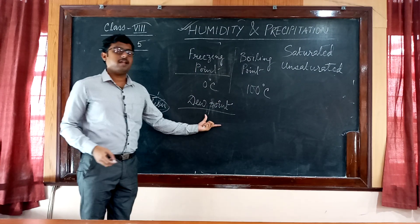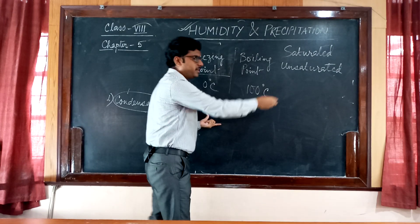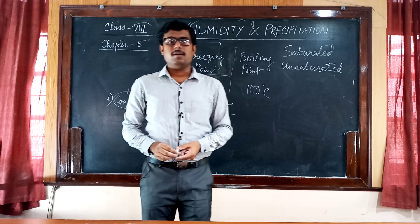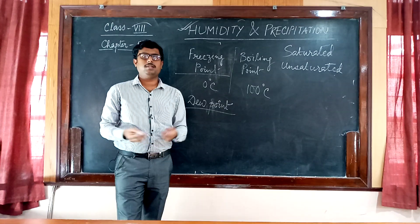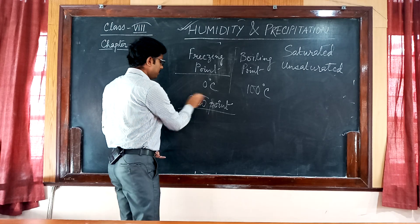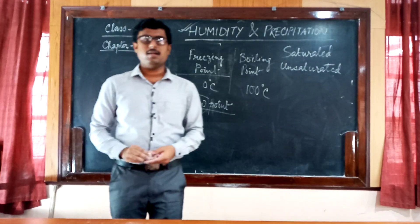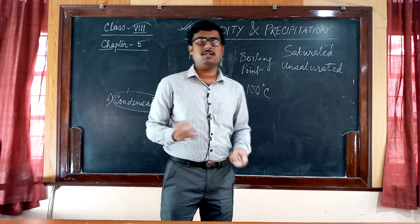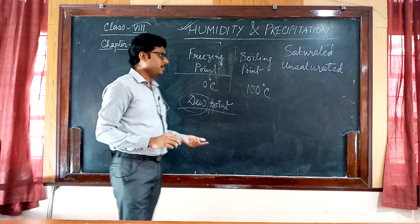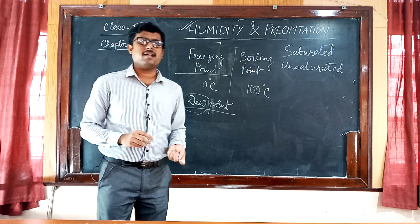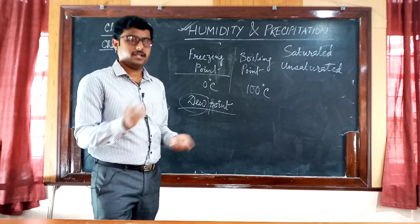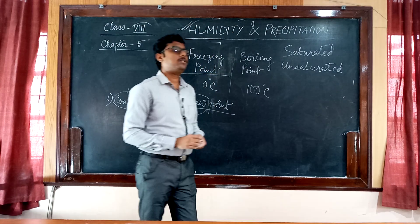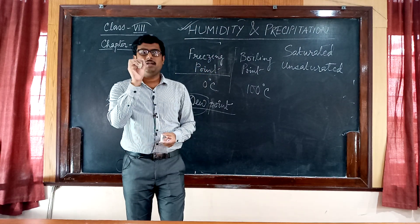The temperature at which the air saturates is called the dew point. Dew is one thing and dew point is another. The dew is a form that can be observed in the atmosphere as tiny water droplets. The question is: is dew a form of precipitation or condensation?